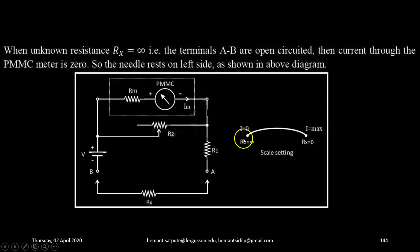So current is 0, it implies the resistance, unknown resistance is infinite. So this is the scale setting.